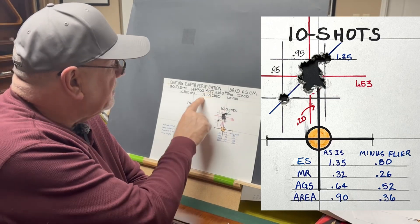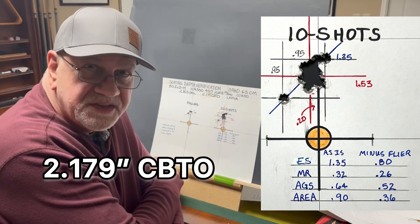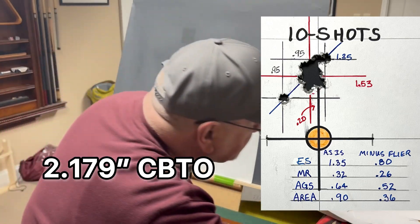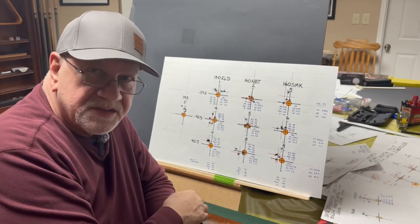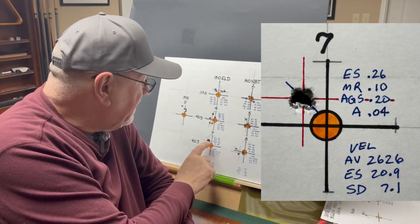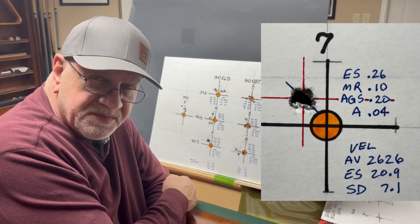So, that's how I got to this load and these were all loaded at 2.179 inches for the cartridge-based to ogive. That's the process that I went through to get me to here. And it looks like it's paid off.